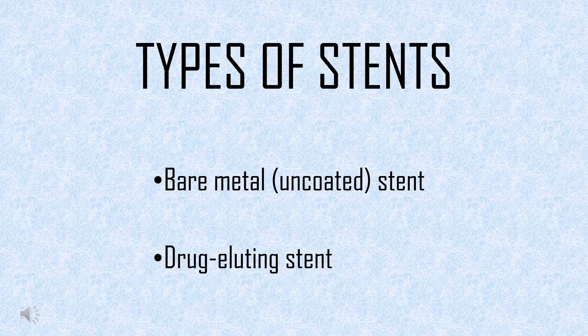Bare metal stents are tiny wire mesh tubes that help widen a blocked artery but are not coated with drugs to prevent reblockage. Drug eluting stents, on the other hand, are coated with slow-release medications to help prevent blood clots from forming in the stent. Commonly used medications in drug eluting stents are Paclitaxel and Sirolimus.